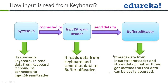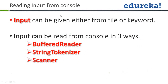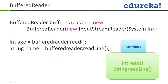Moving on — reading input from the console. Input can be given either from a file or the keyboard. Input can be read from the console in three ways: the first is BufferedReader, the second is StringTokenizer, and the third is Scanner. We'll go through each one of them, and first we'll understand what BufferedReader is and how to use it.